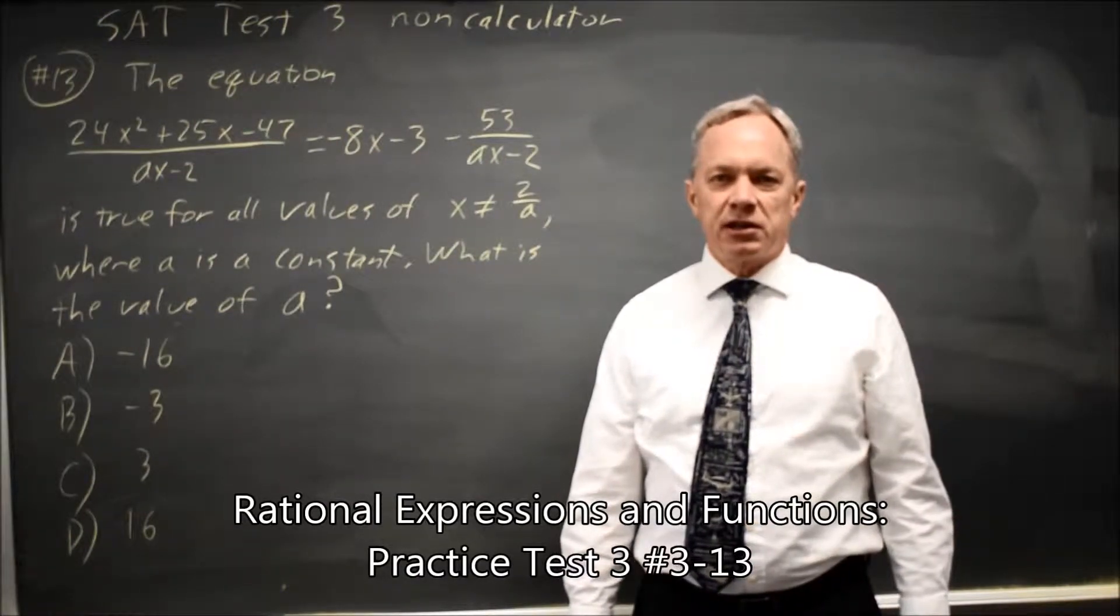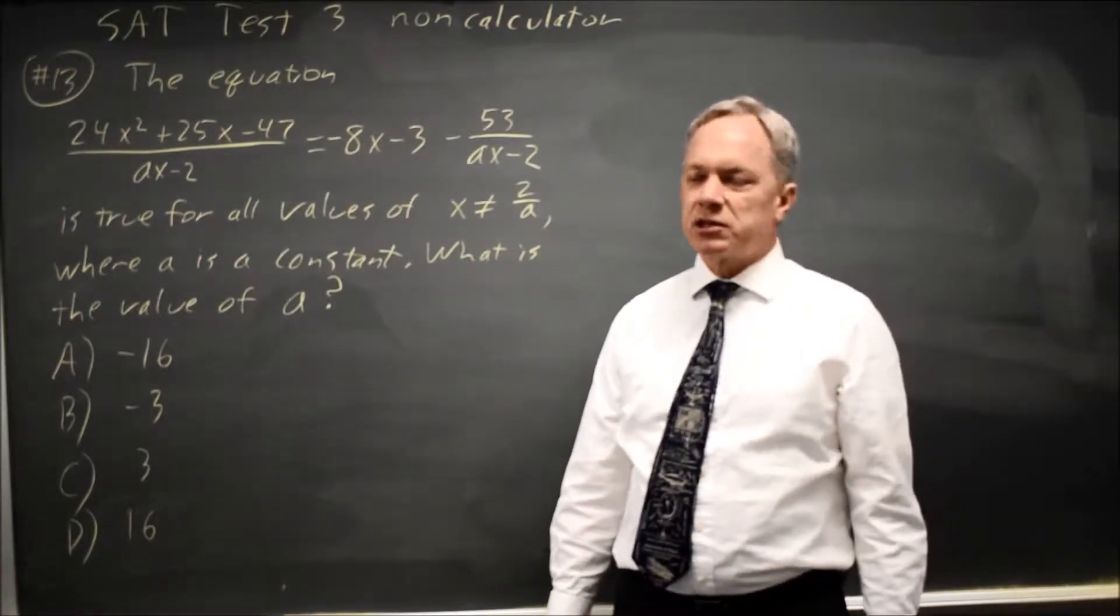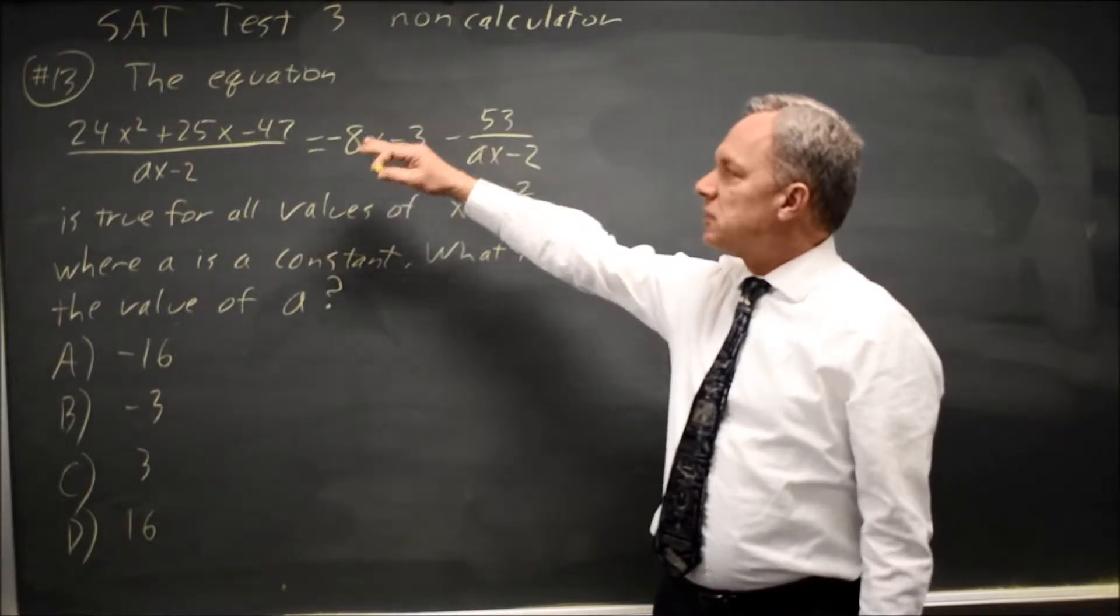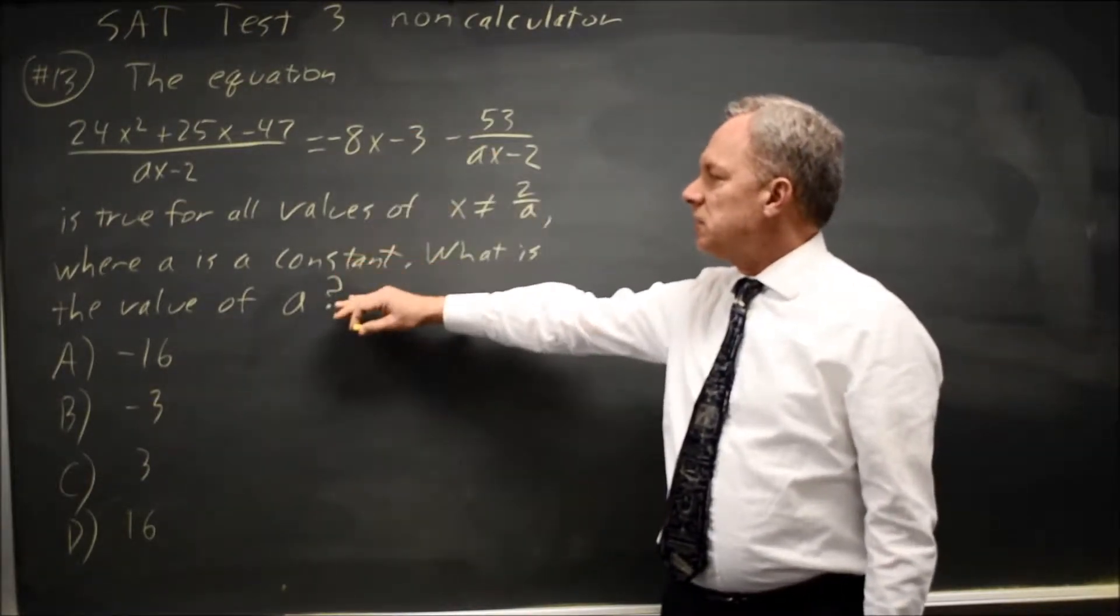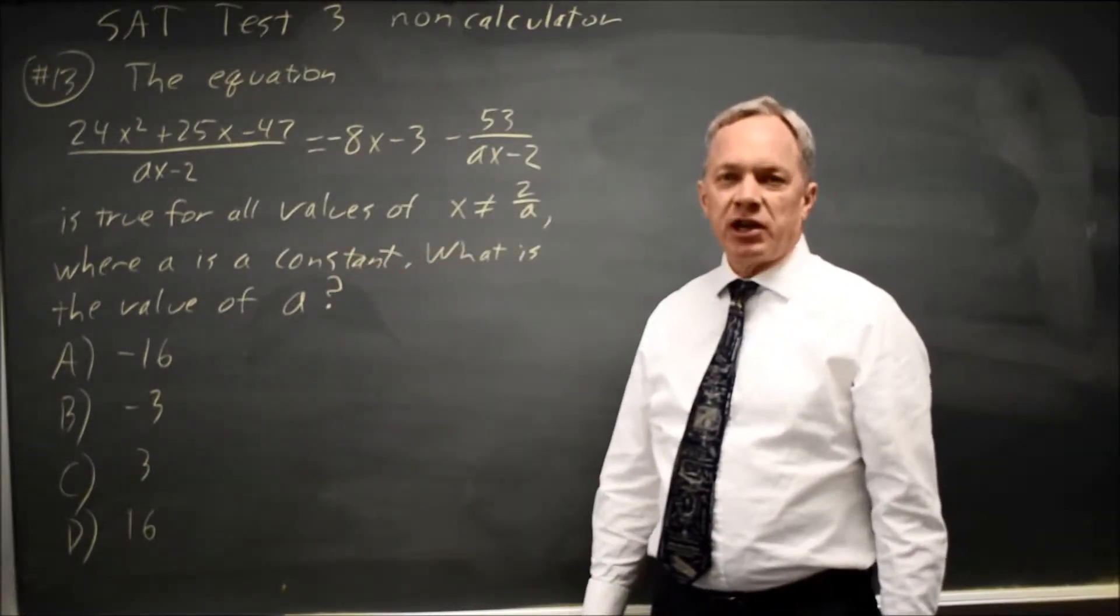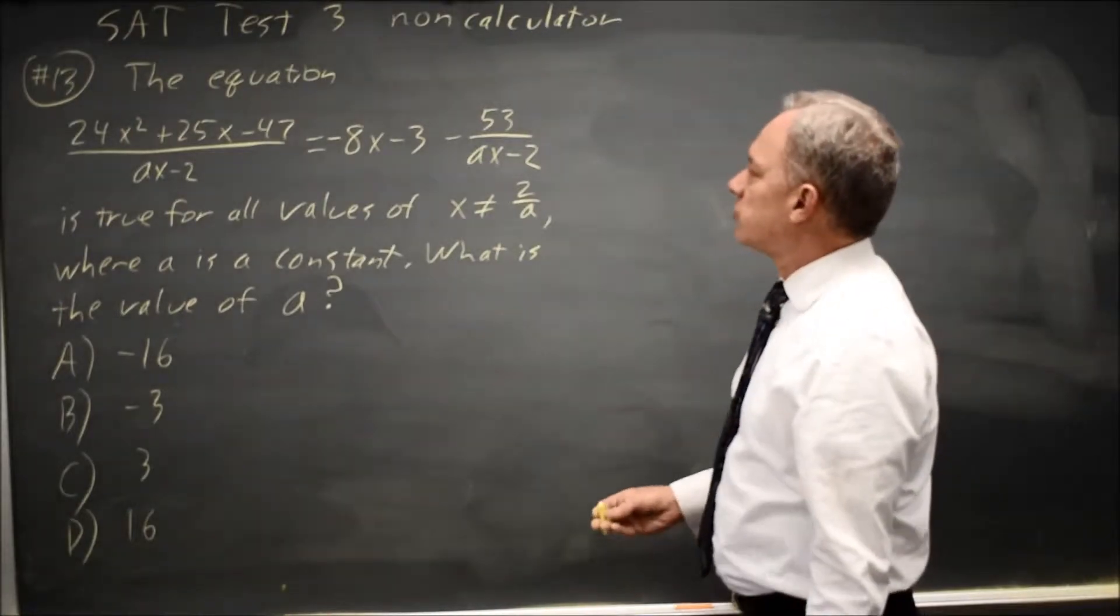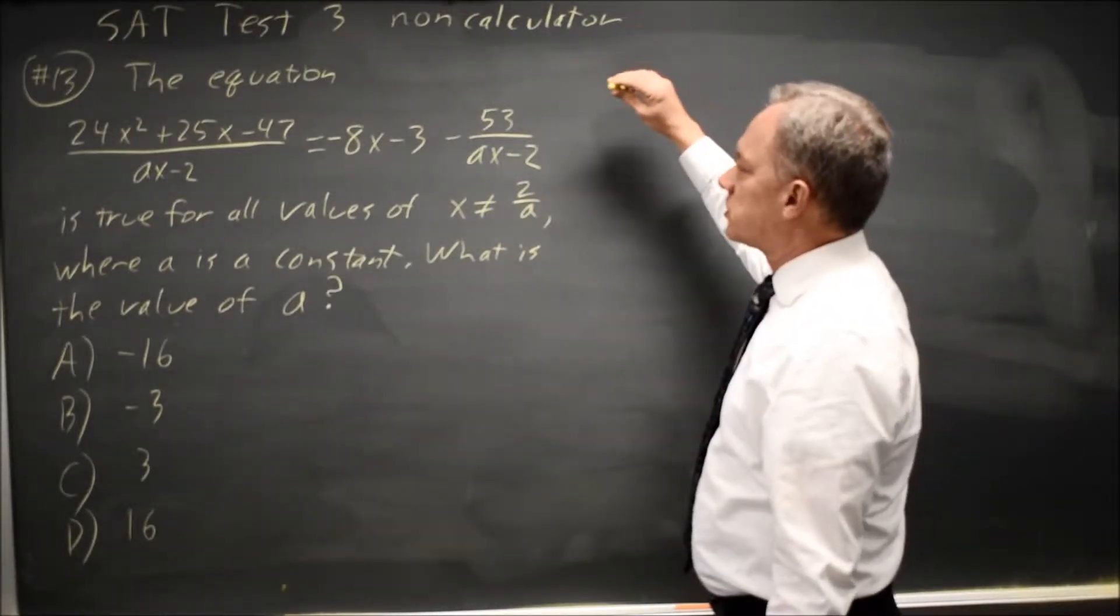This is SAT test 3, non-calculator question number 13, dealing with a rational equation. The question is, for this rational equation, what is the value of A if this is true for all X, except X equals 2 over A?